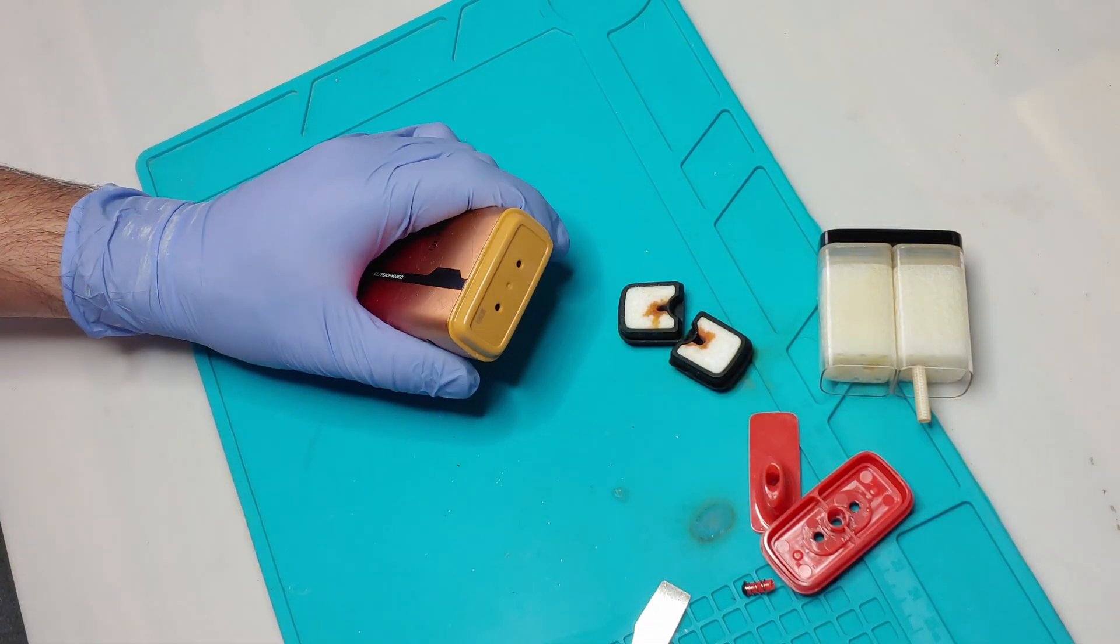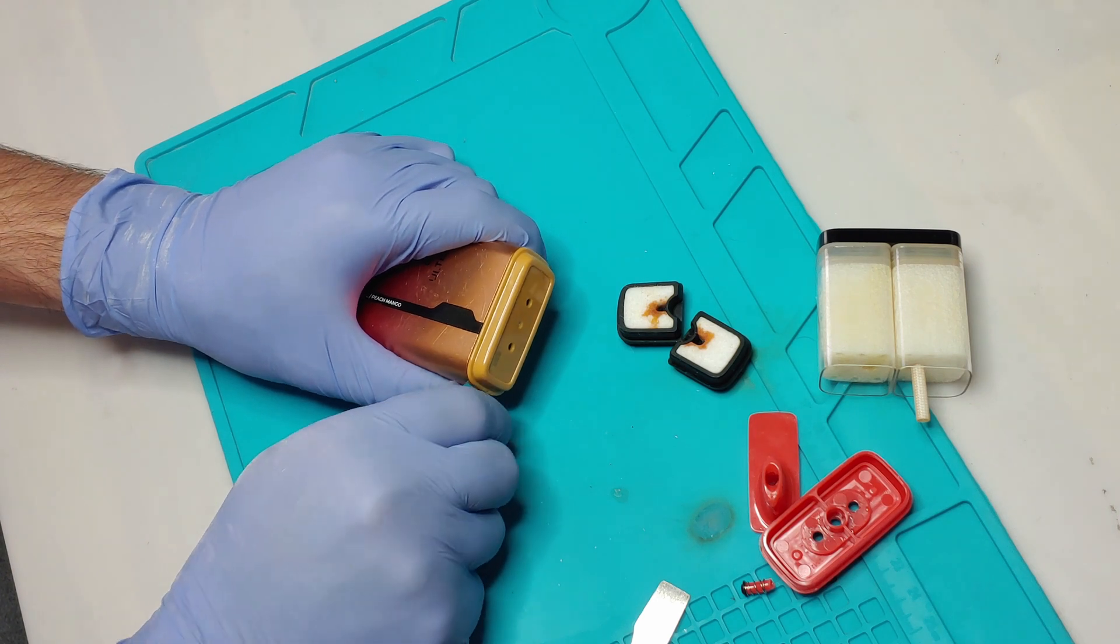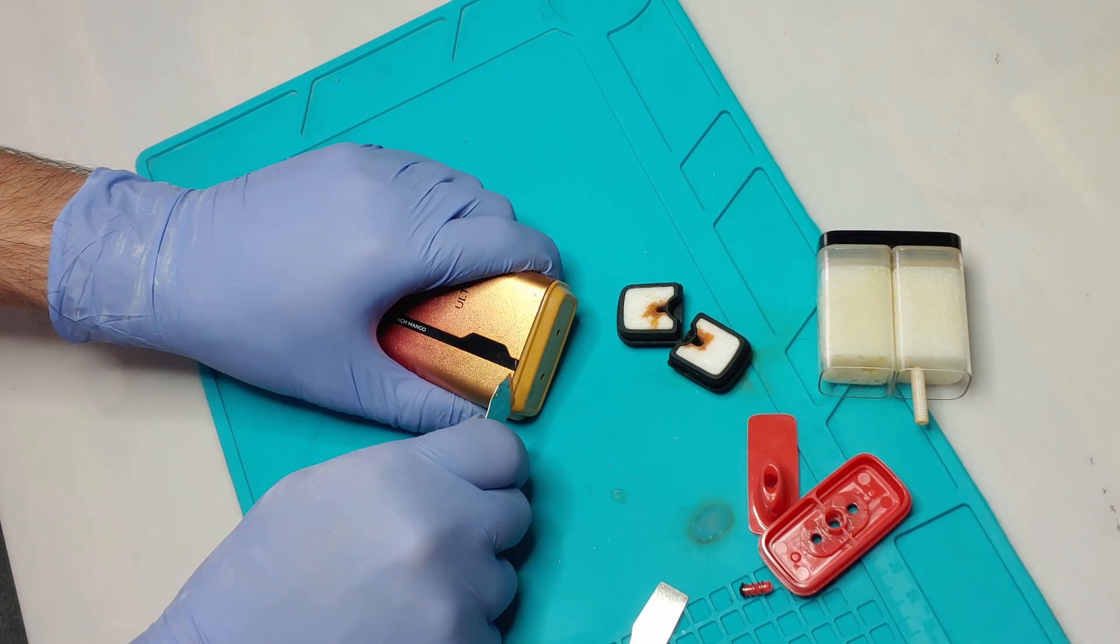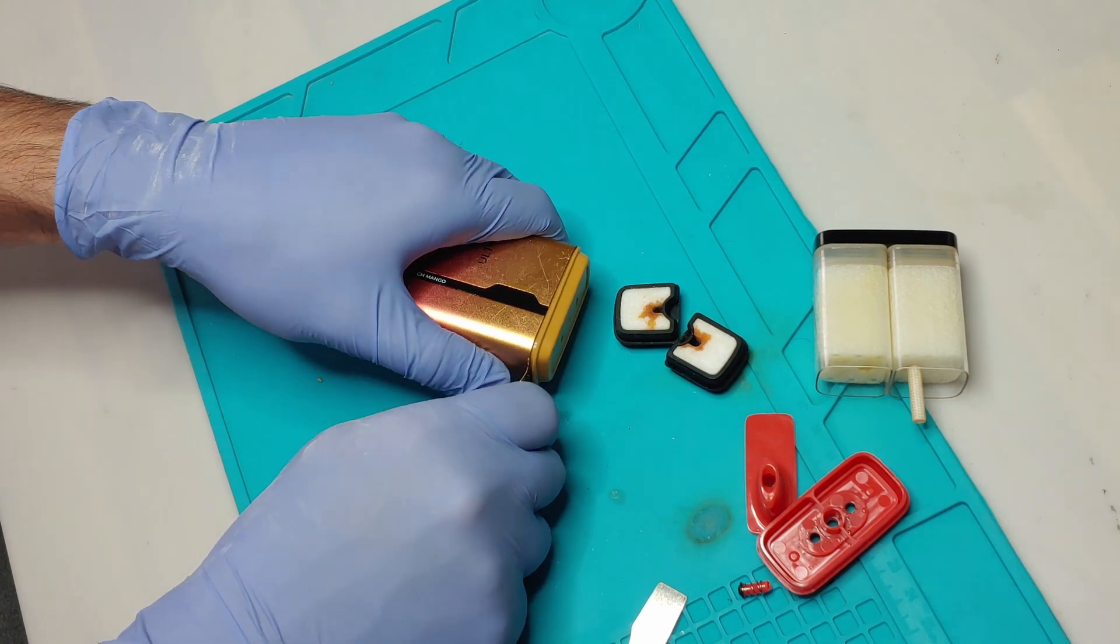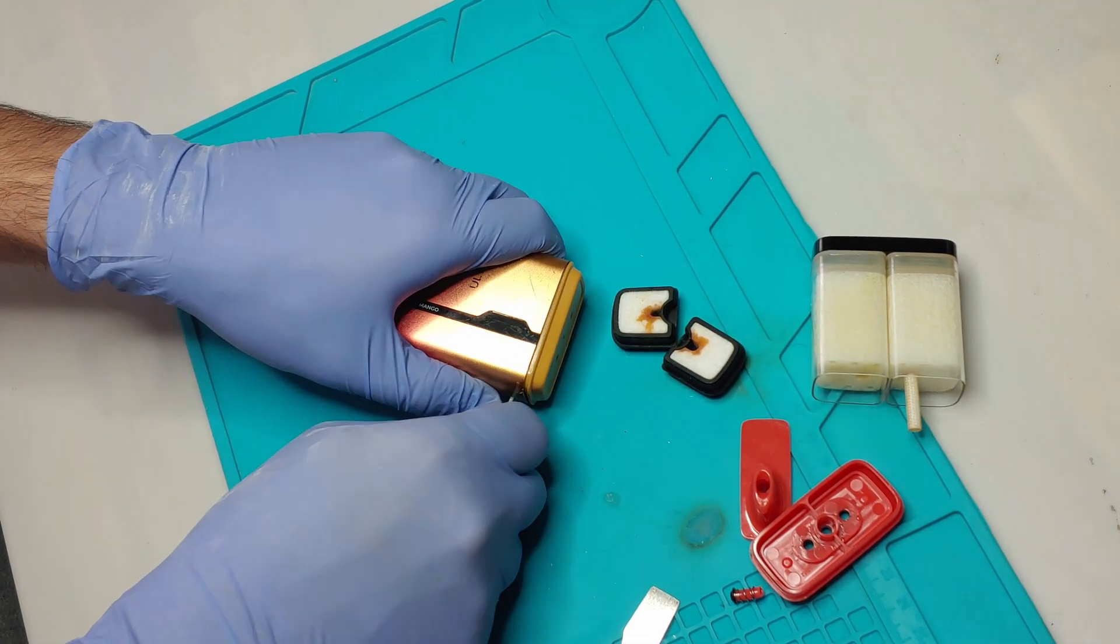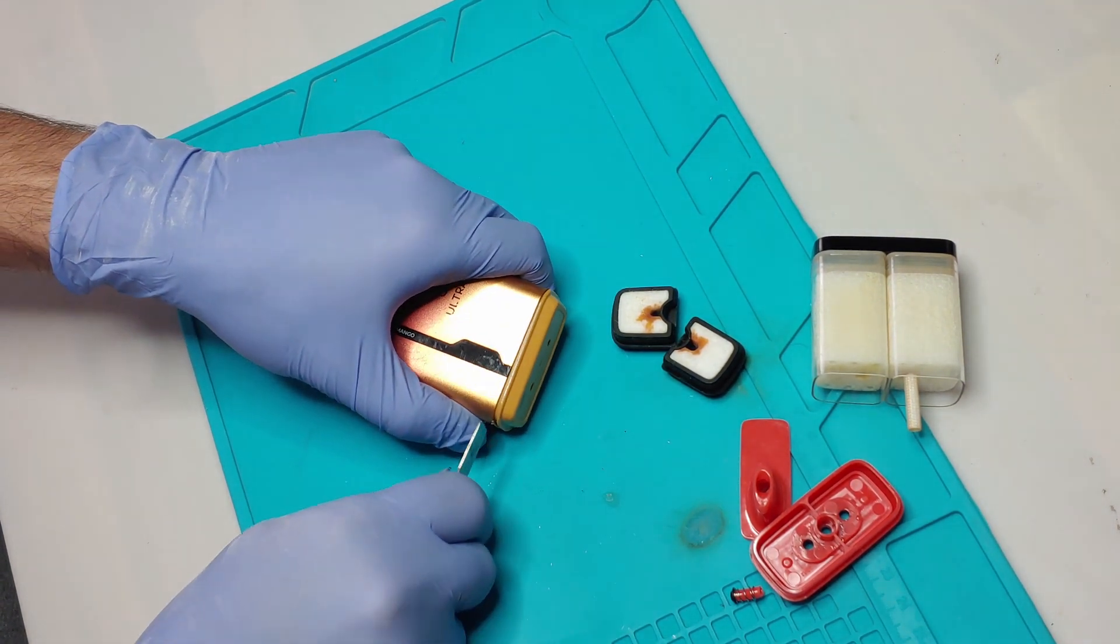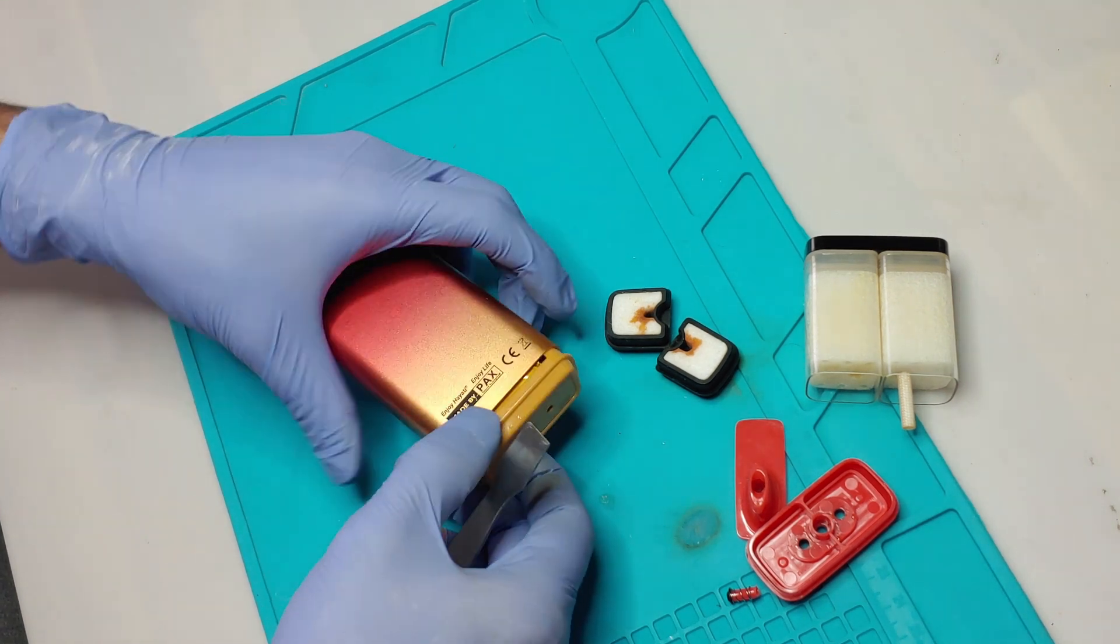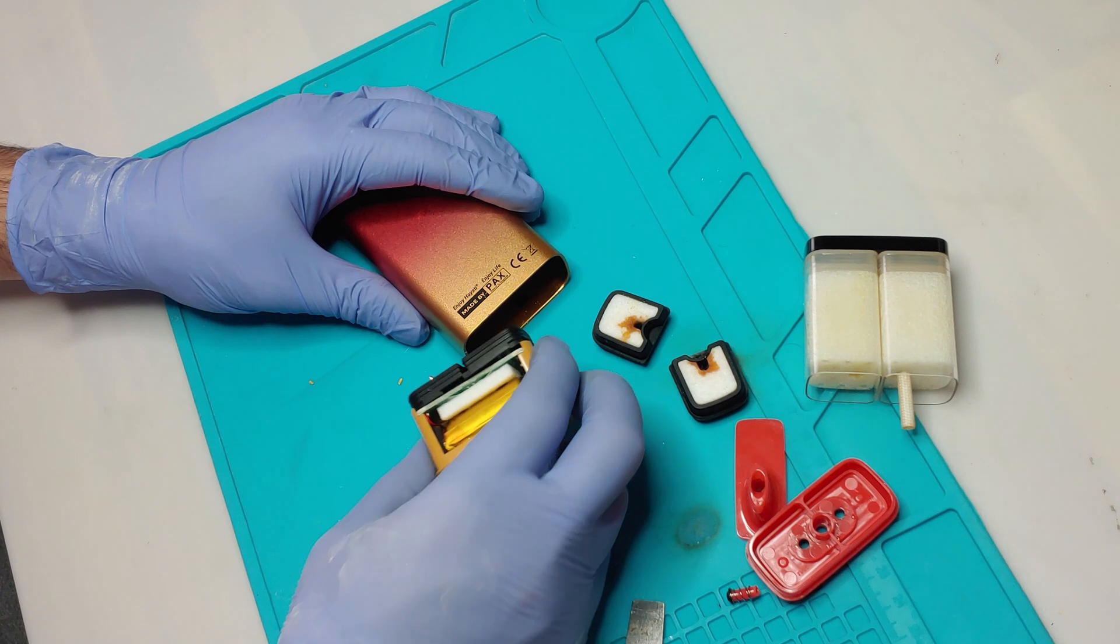Next thing, the other side. I'm going to use something maybe thinner. If you don't have it you can always use like a knife or something. Just to get around. A little bit more stronger. Around the whole edges. And there we go. It comes off.